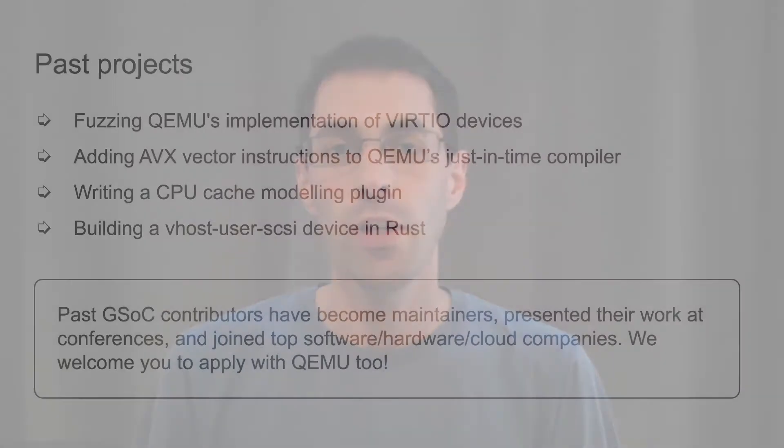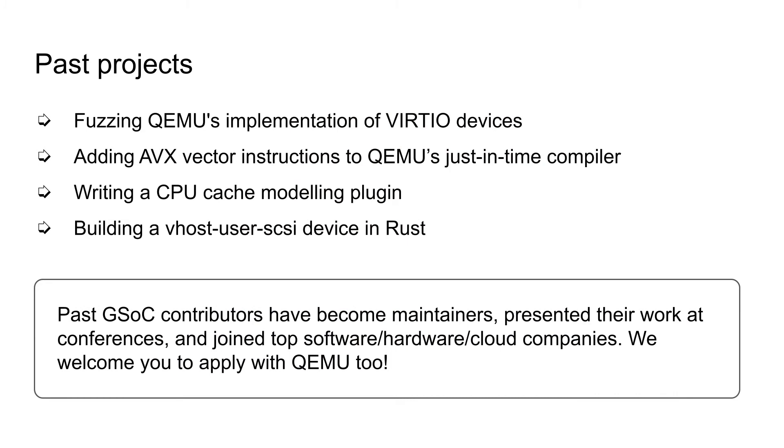QEMU has been a Google Summer of Code organization since 2010 and our projects are primarily in C, Rust and Python. Some examples of past projects include fuzzing QEMU's VirtIO devices, adding AVX vector instructions to QEMU's just-in-time compiler, and writing a CPU cache modeling plugin.